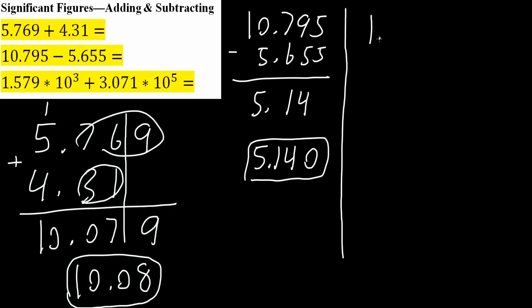So I would have 1.579 times 10 raised to 3. And I'll change this in order to get 10 raised to 3. So I would get 307.1 times 10 raised to 3.